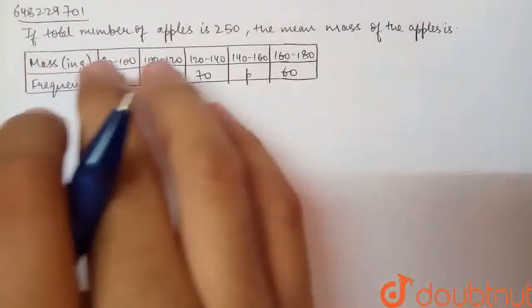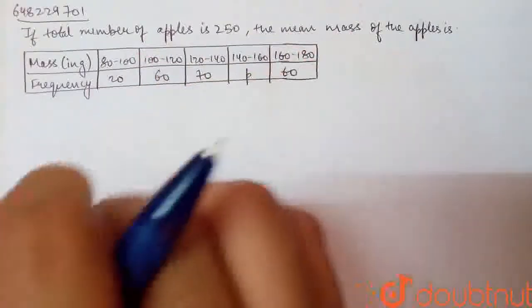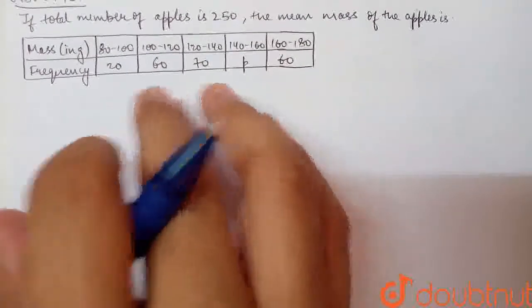In this question, we have said that if the total number of apples is 250, the mean mass of the apples is this. We have the total number of apples here is 250 given.